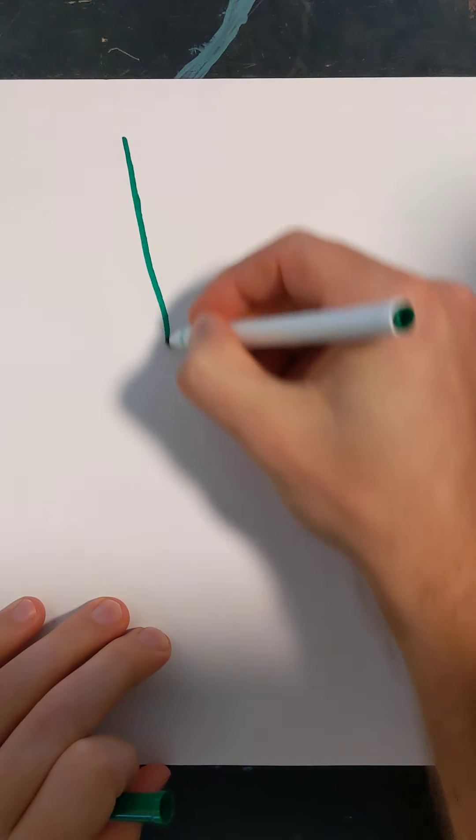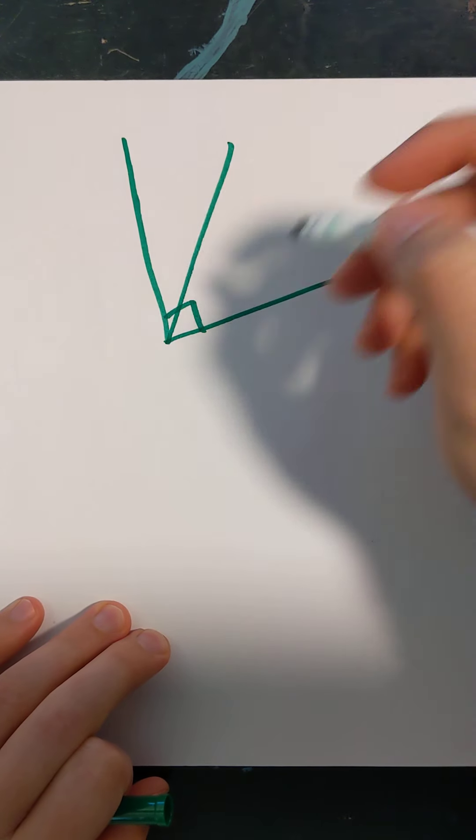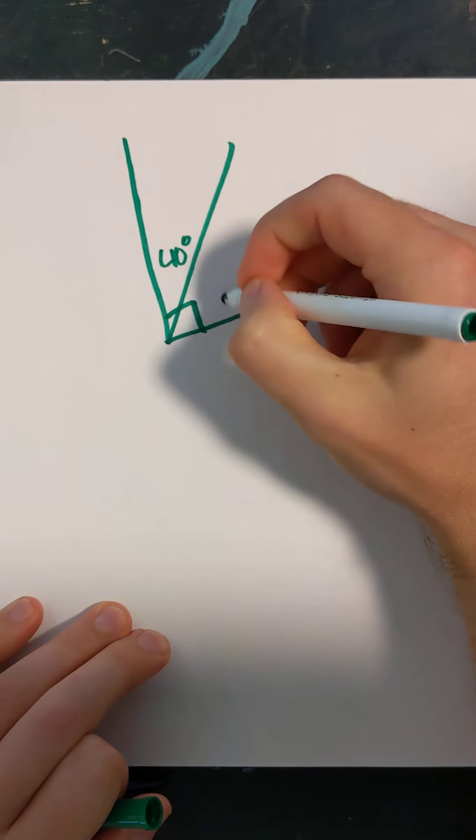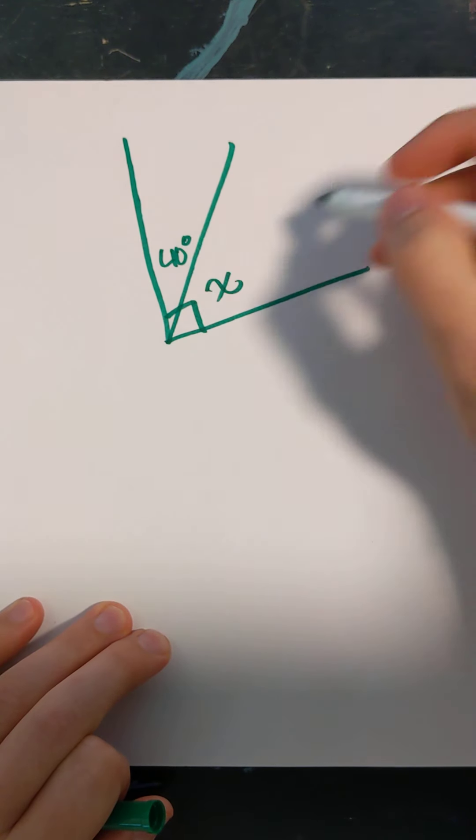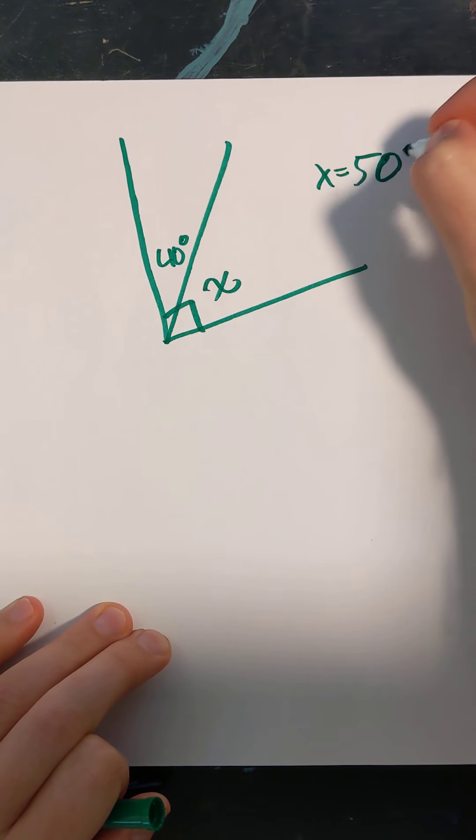Let's say I have this right here. We see the little box, so that means it's a right angle. When I cut off this part, it's 40 degrees. What must this be? Let's call it X. Well, what plus 40 equals 90? X equals 50 degrees.